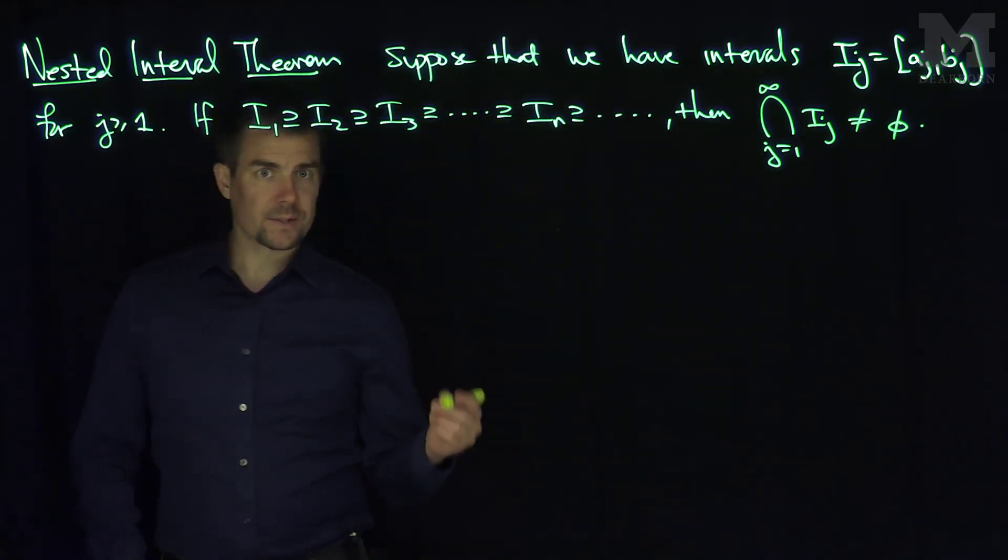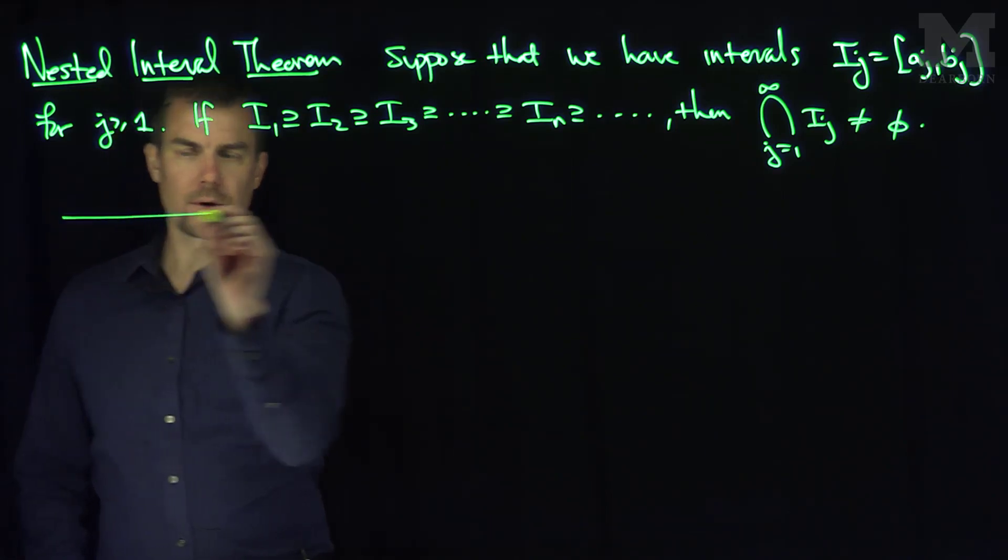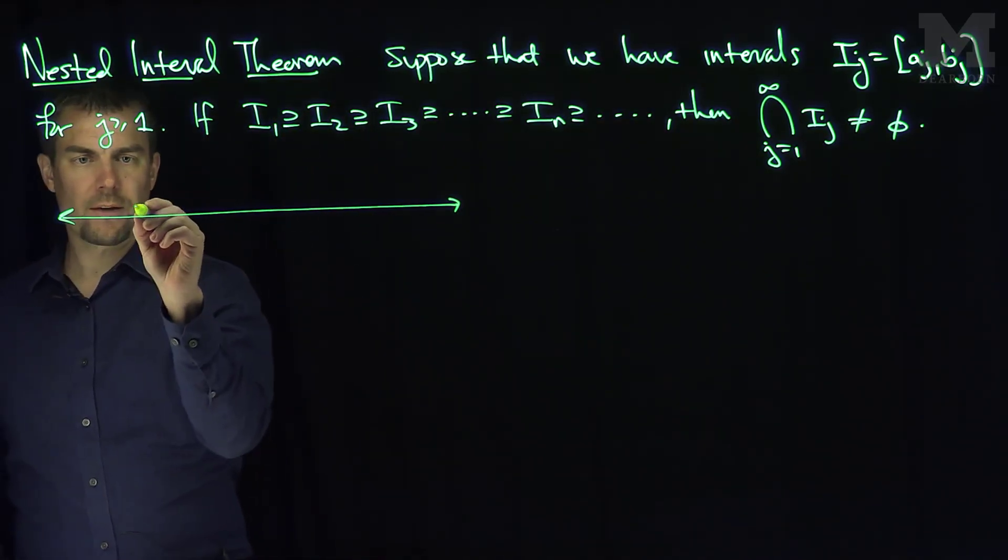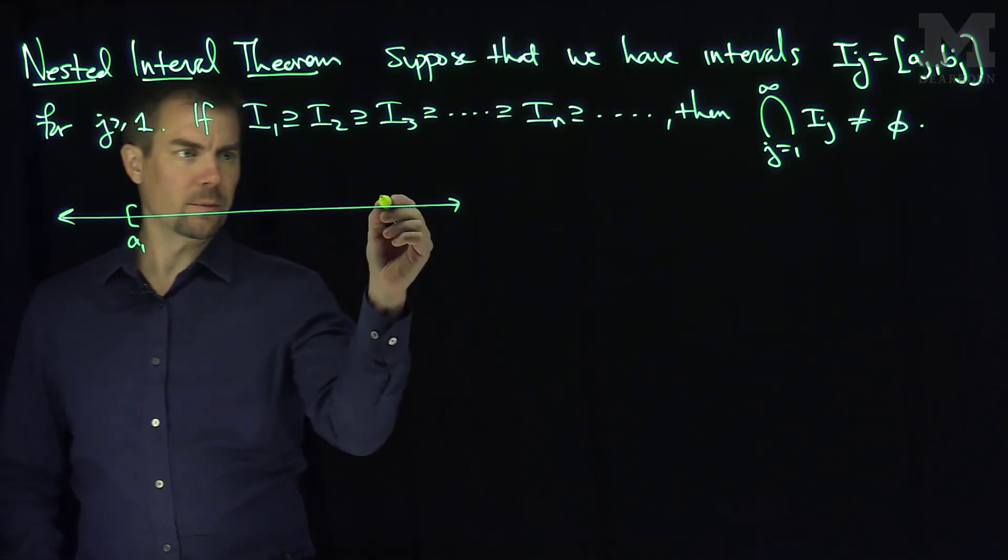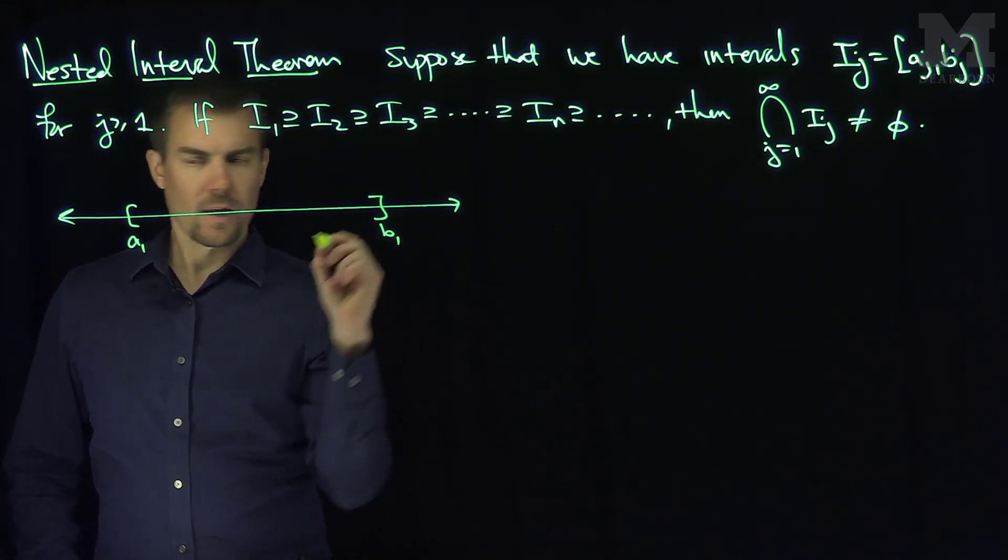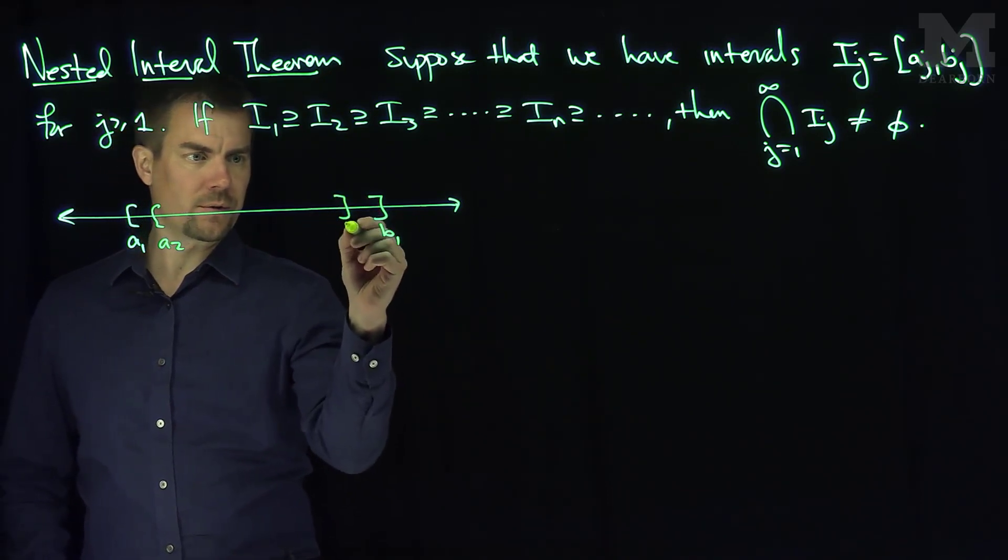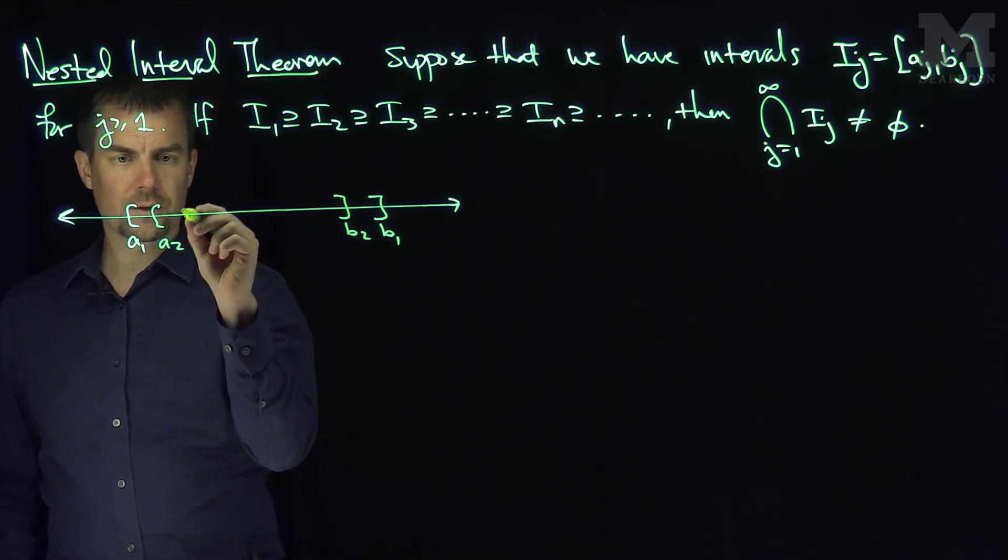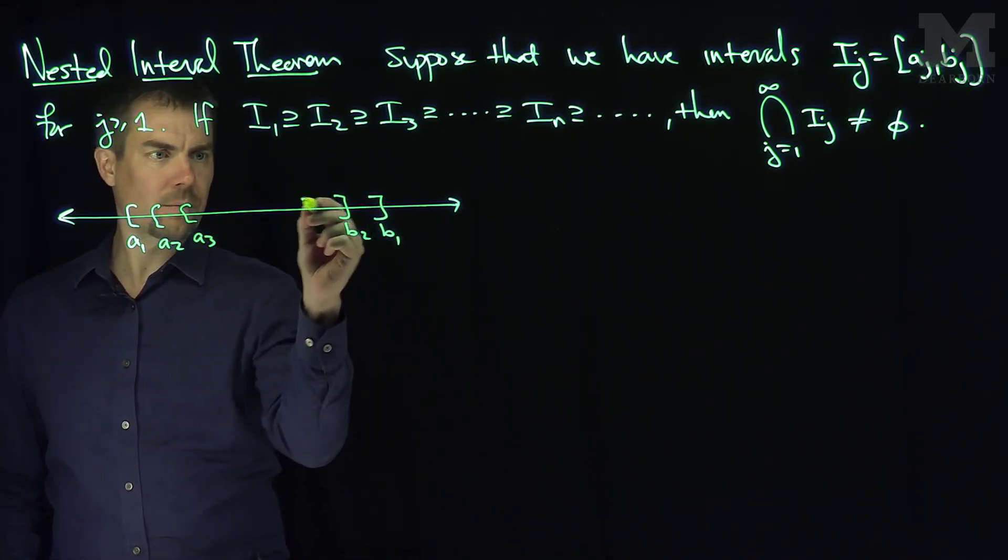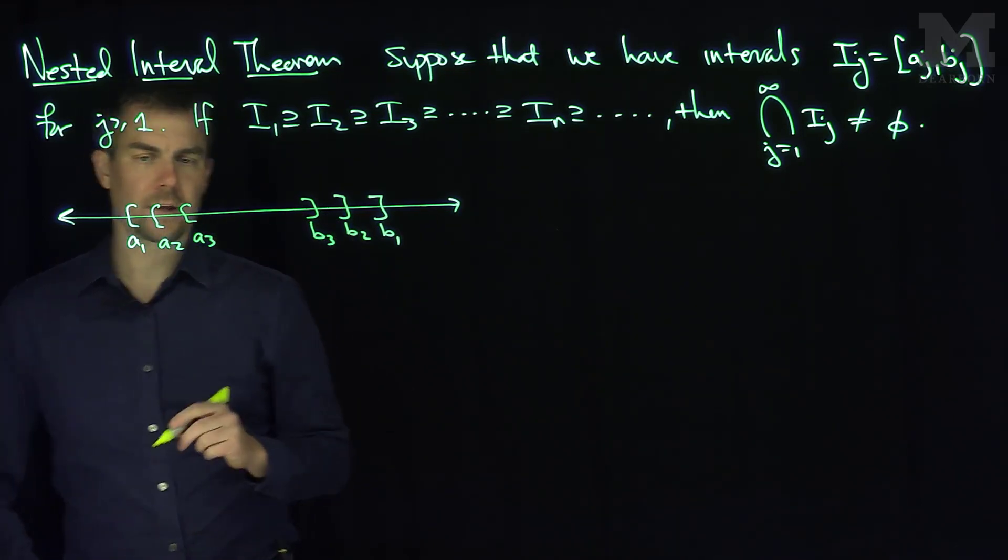So what we're gonna do is we have to get a sense of what these look like. So here's a copy of the number line. So you might have a closed interval from a1 to b1 that contains the interval a2 to b2, etc., a3 to b3, like this.